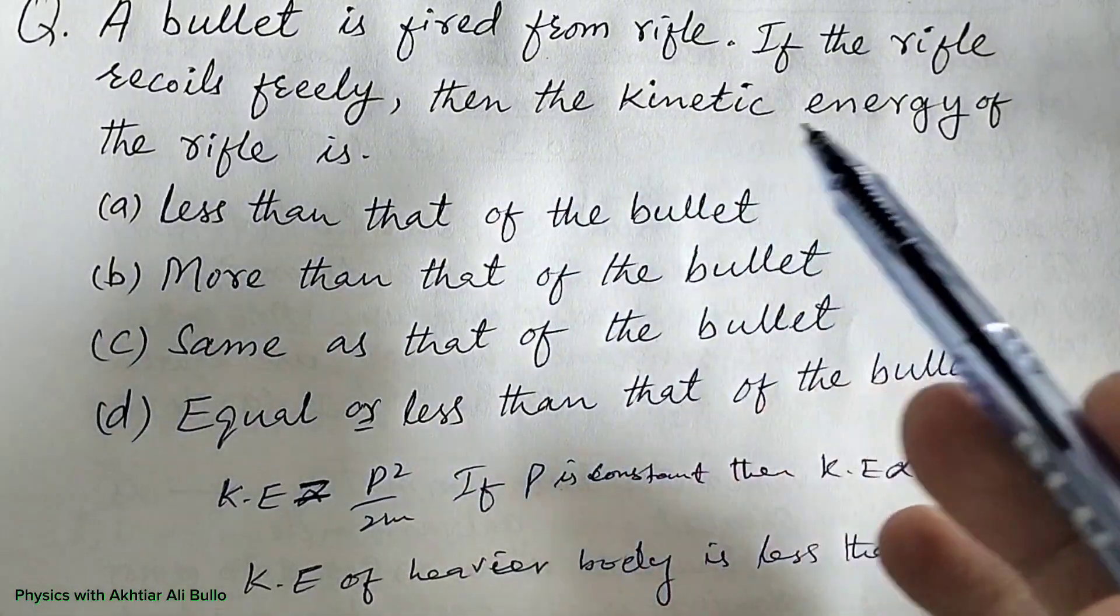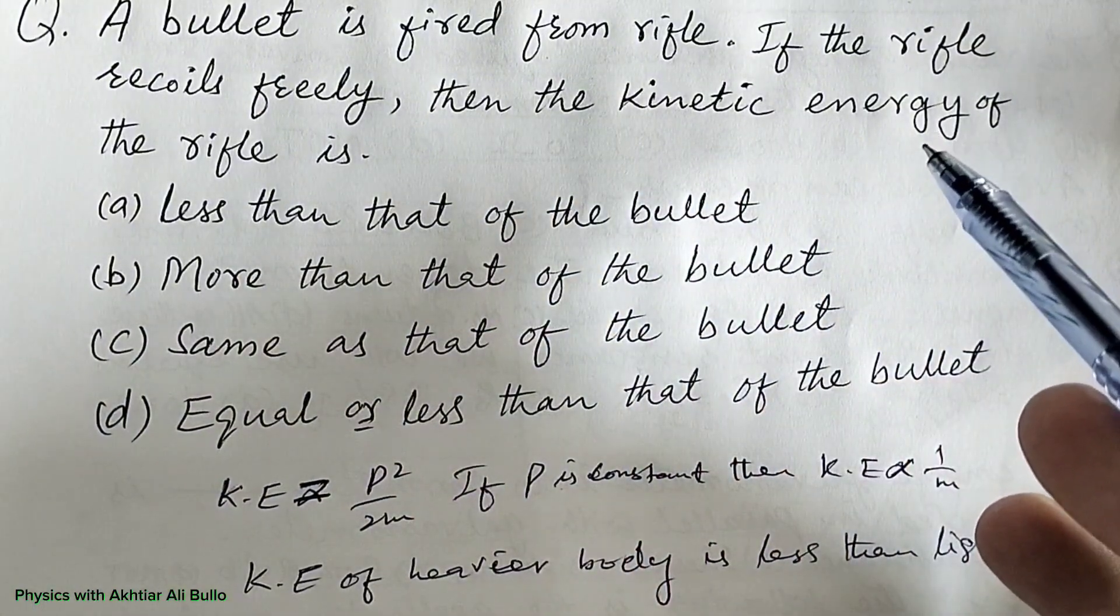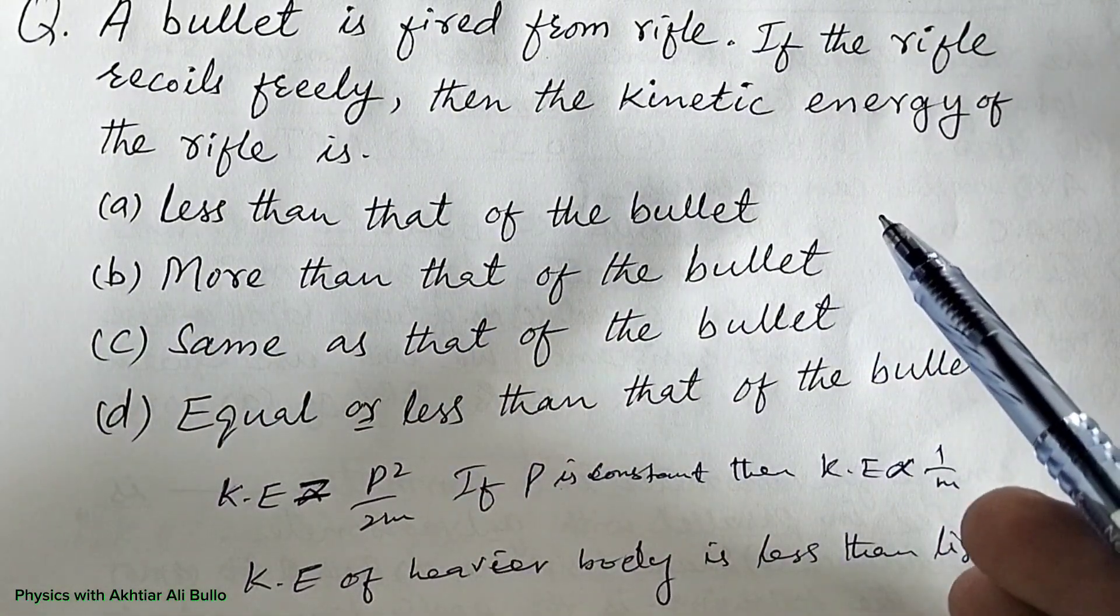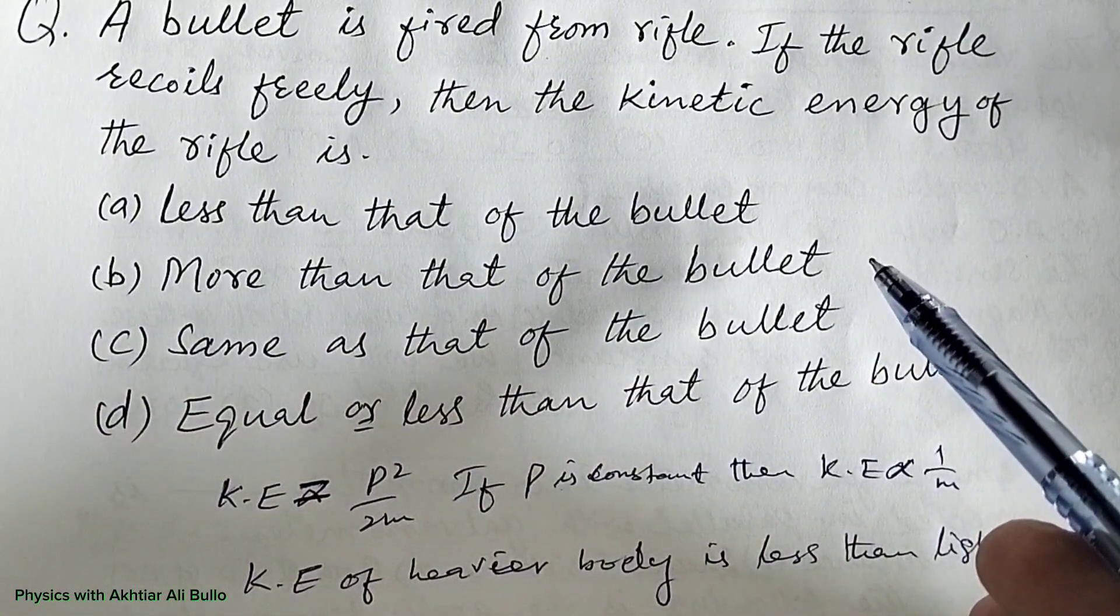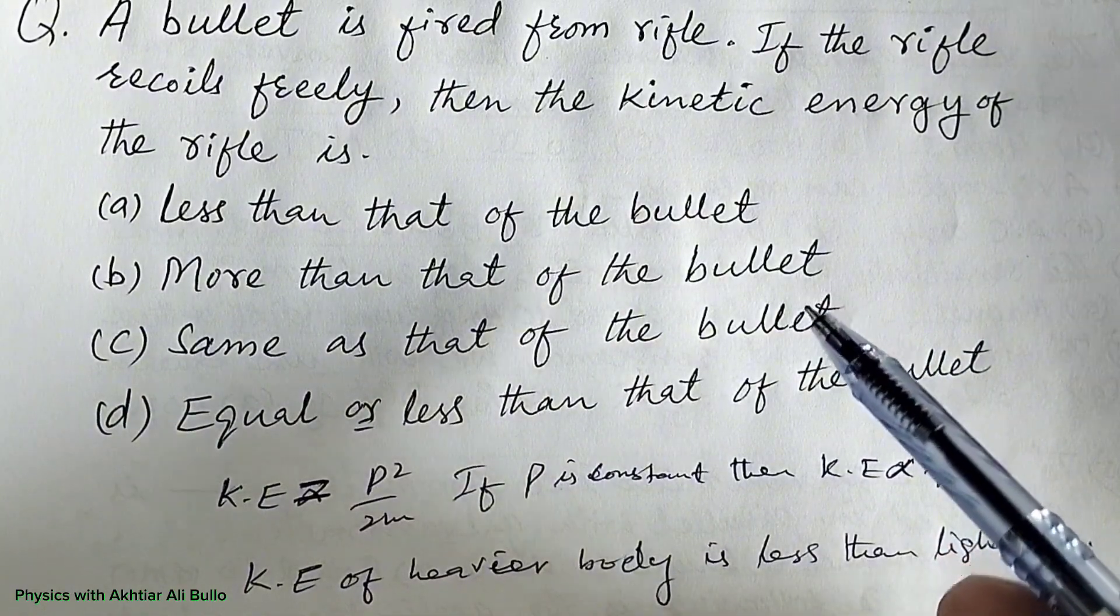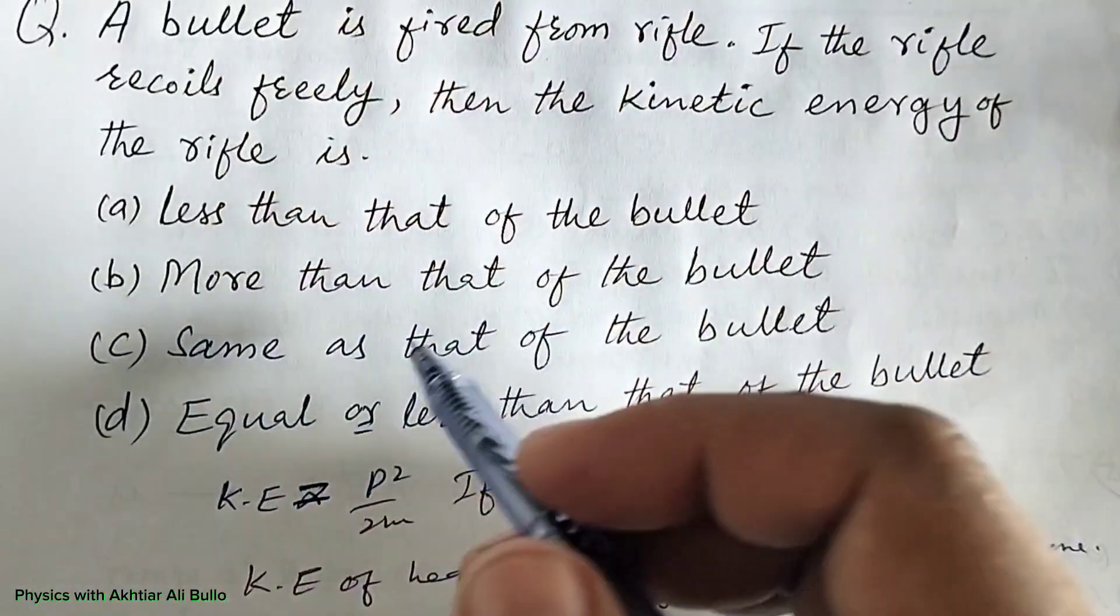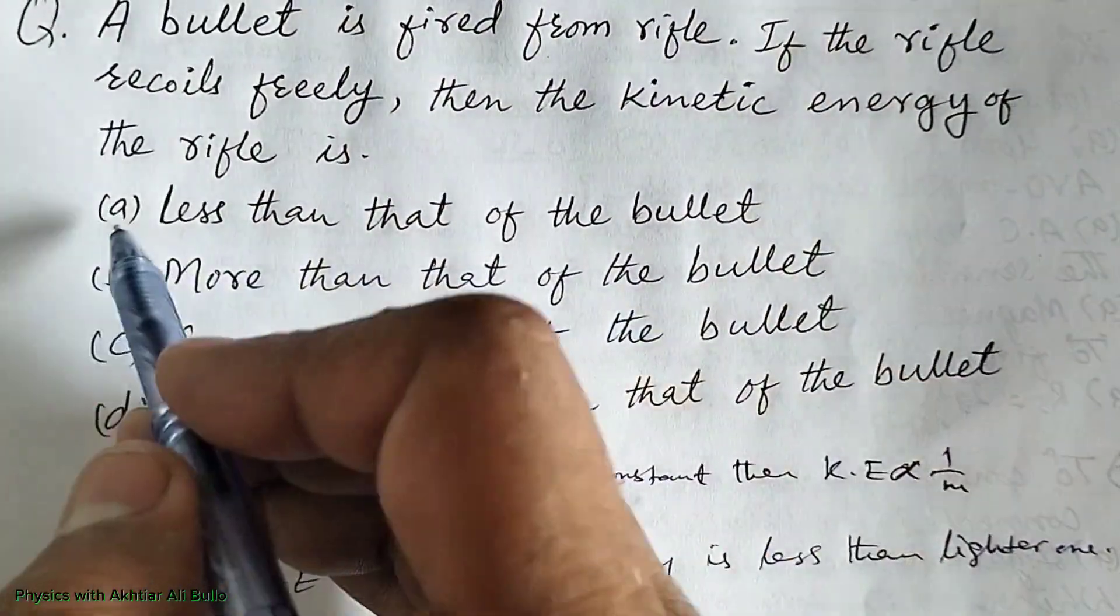So the rifle is heavier than the bullet, so the kinetic energy of the bullet is more than the kinetic energy of the rifle. Therefore, the correct option is (a) less than that of the bullet.